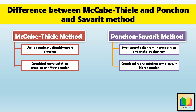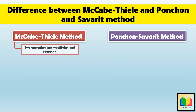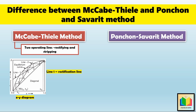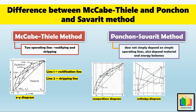Regarding the equilibrium curve: in the McCabe-Thiele method, the equilibrium curve represents the relationship between liquid and vapor compositions in a binary system. In the Ponchon-Savarit method, the equilibrium curve is also used but extended to multi-component systems. For operating lines, the McCabe-Thiele method has two: the rectifying line, representing the vapor-liquid relationship in the rectifying section, and the stripping line, representing the vapor-liquid relationship in the stripping section. Since the Ponchon-Savarit method involves both composition and enthalpy diagrams, it does not simply depend on operating lines; instead, it uses an additional strategy that includes both material and energy balances across multiple components.